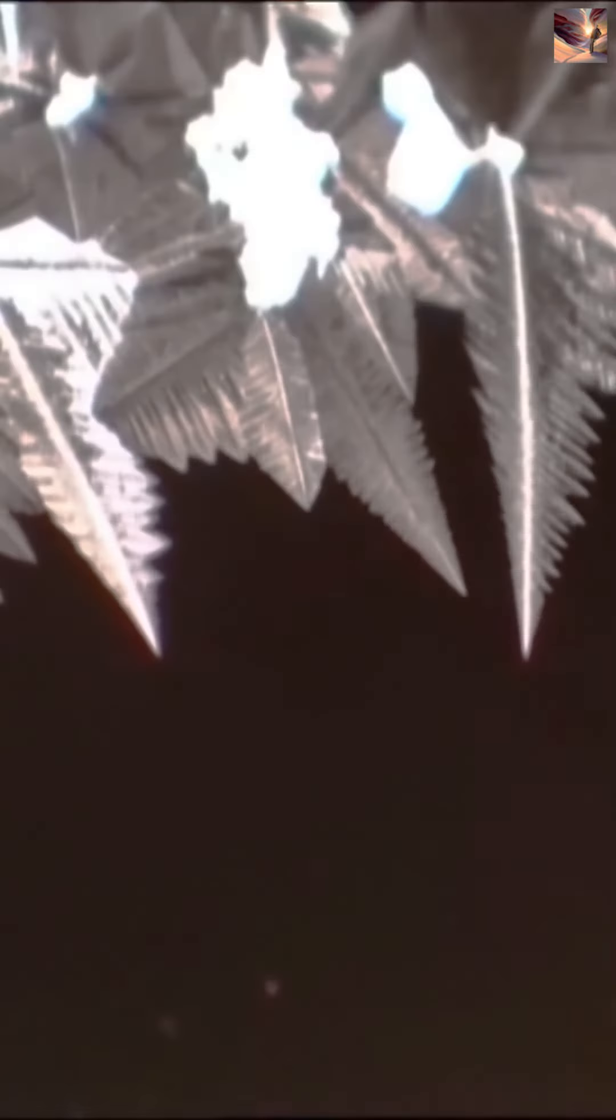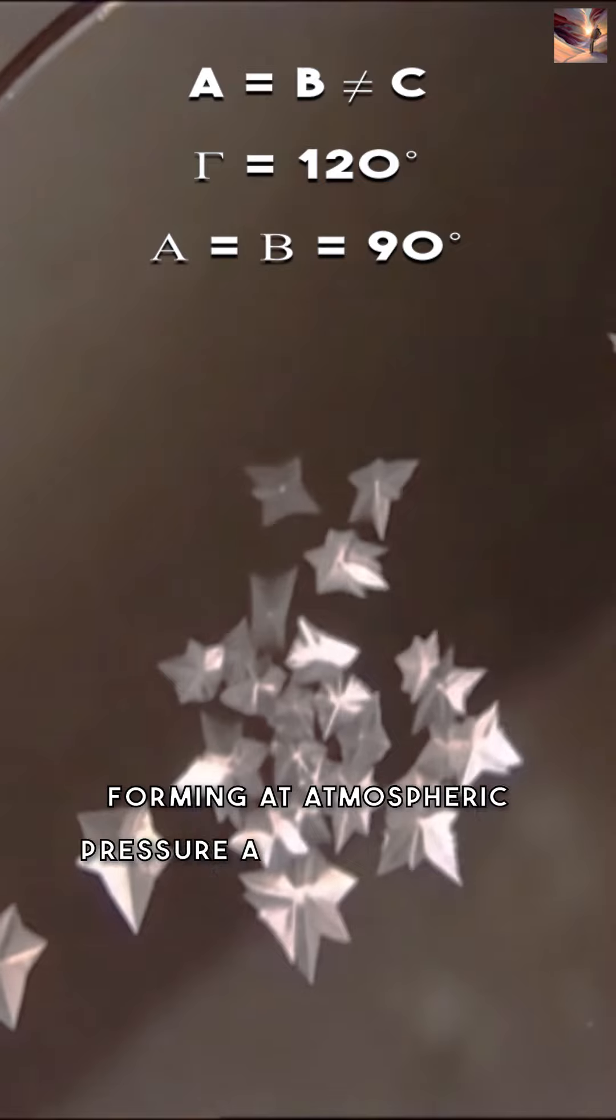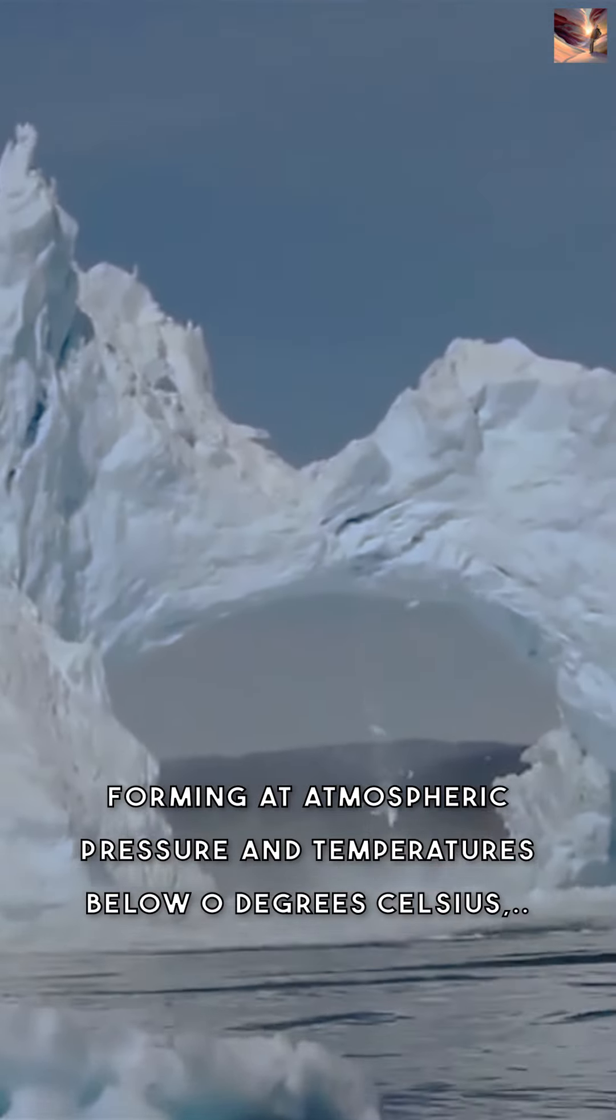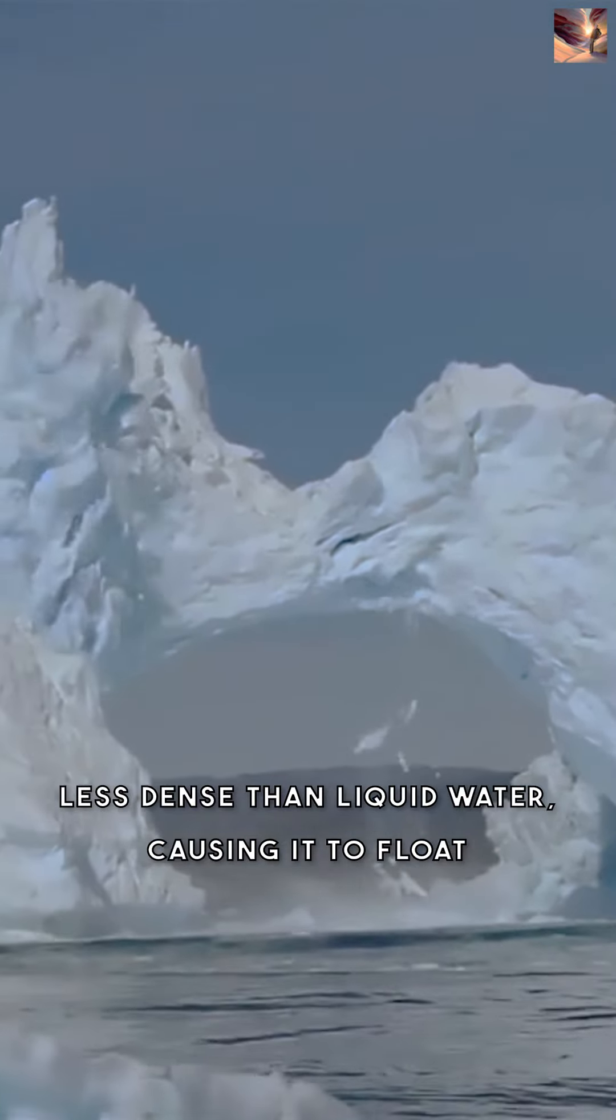Ice 1 is the most common phase of ice, with a hexagonal crystal structure forming at atmospheric pressure and temperatures below 0 degrees Celsius. It is less dense than liquid water, causing it to float.